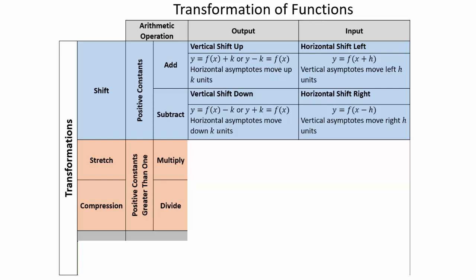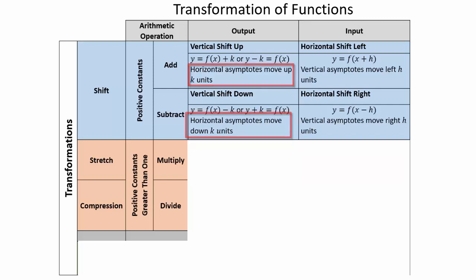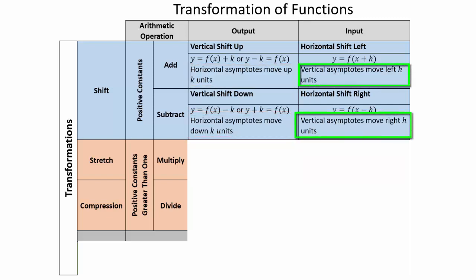Don't forget that vertical and horizontal asymptotes also shift with the graph. If it's up or down movement, it's the horizontal asymptote that will move. If it is left or right movement, it's the vertical asymptote that will move.